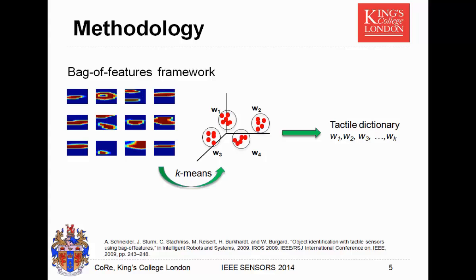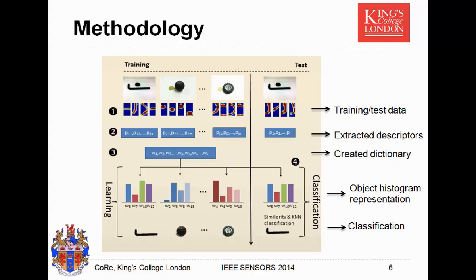In more detail: first, we get some test objects and collect tactile readings from them. For example, we have an object where we can see a corner and some circular features from the readings. Second, we extract features from these images. From these features, we create a dictionary for the object pool. After that, we assign different words to these objects to get object histograms, calculating feature frequencies. Based on this, we classify the objects with a KNN method.